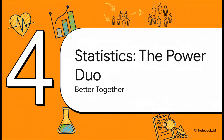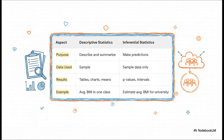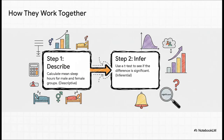These two branches aren't rivals — they're partners in a process, a real power duo. You cannot make a credible inference without having solid ground to stand on first, and that solid ground is your descriptive data. Descriptive statistics might tell you the average BMI of students in one single class, but inferential statistics takes that data and tries to estimate the average BMI for the entire university. One describes the few, the other predicts for the many. First you describe what you actually found in your small group — that's step one, that's descriptive. Only then can you move to step two and use a statistical test to figure out if that difference you saw is big enough to probably be true for everybody — that's the inference.